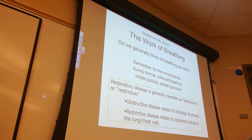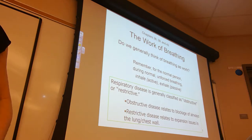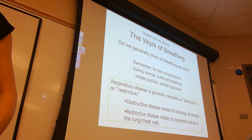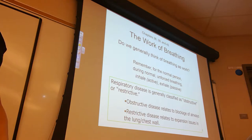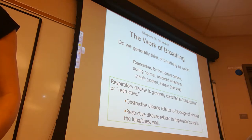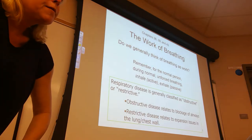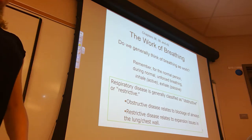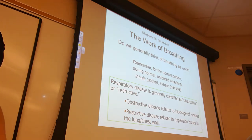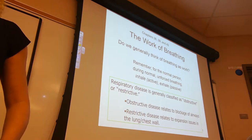Under the restrictive category, that is a problem with inhalation. Inhalation is already ATP consuming. People with restrictive disorders really consume a lot of ATP to get the same 500 milliliters into their lungs. Lots of things can go into the restrictive category — it could be scoliosis, kyphosis, or any exaggerated curvature of the spine.